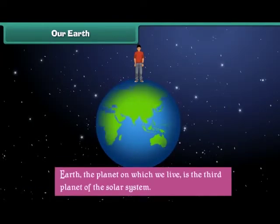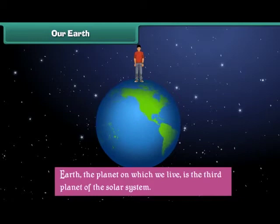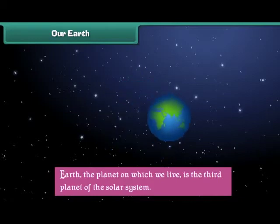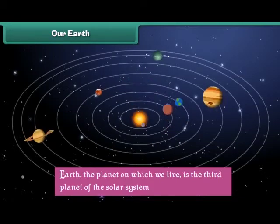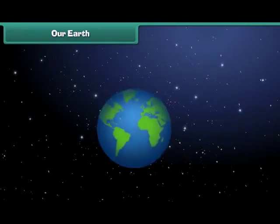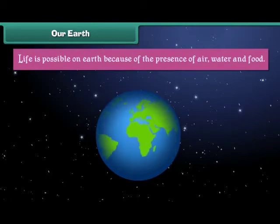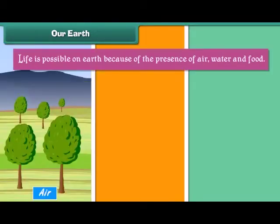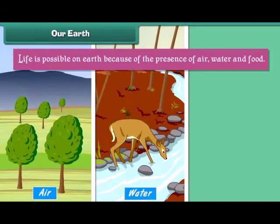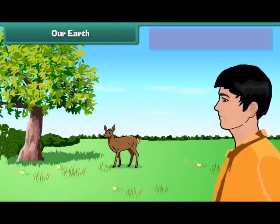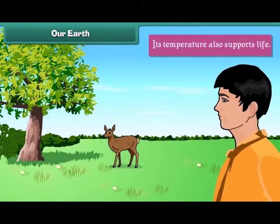Earth, the planet on which we live, is the third planet of the solar system. Life is possible on Earth because of the presence of air, water and food. Its temperature also supports life.